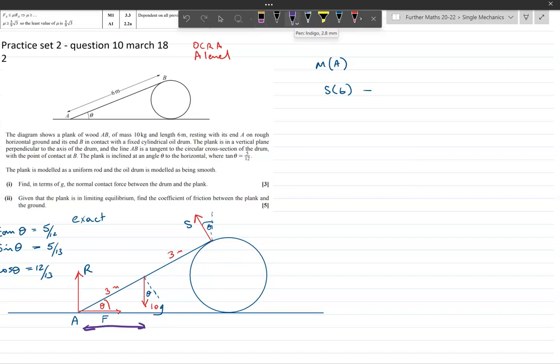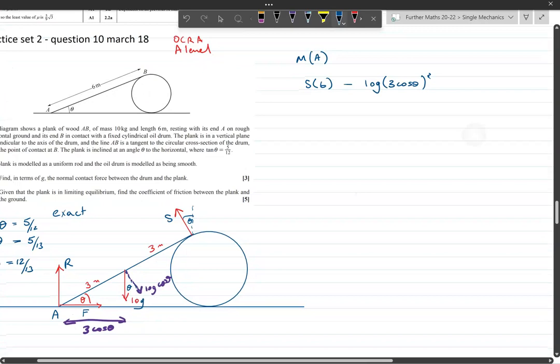There, and using the right angle triangle here, that is 3 cos theta. Some people prefer to actually look at the component of the 10g, which is 10g cos theta, and times that by 3. Either way you get the same end result, but I'm going to go with times in the 10g by the 3 cos theta. So 10g times 3 cos theta equals zero.